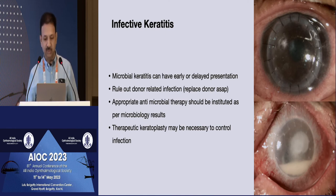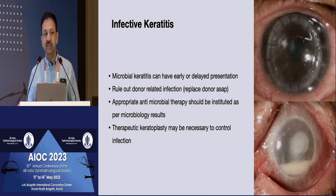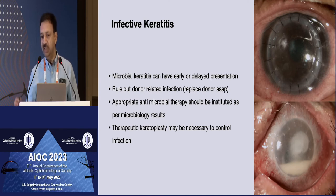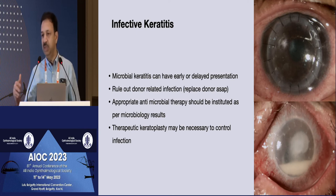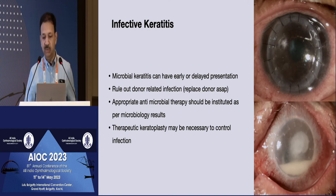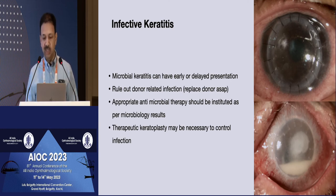Always keep a suspicion, and if you've done a lamellar graft and see an infiltrate in the interface, topical therapy may not be able to access that interface well. Early removal of the donor lenticule, treating the infection, and then repeating the surgery later seems to be a better option. If it is very fulminant, you can perform an early therapeutic keratoplasty rather than waiting for the infection to spread.